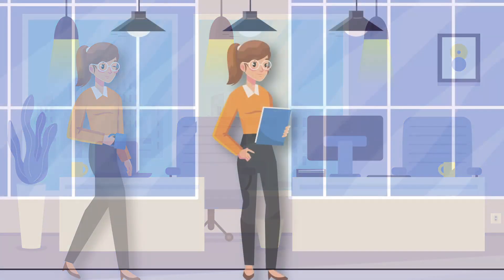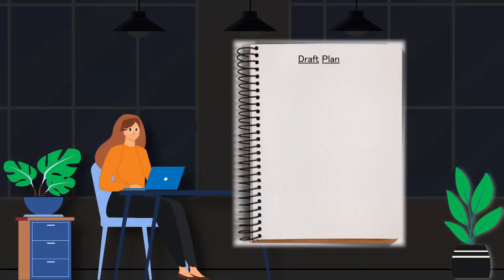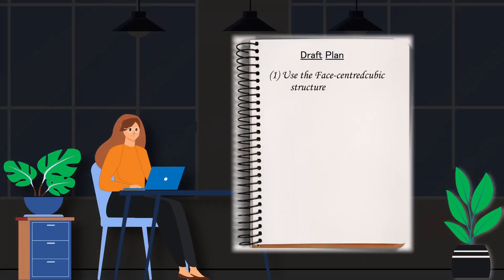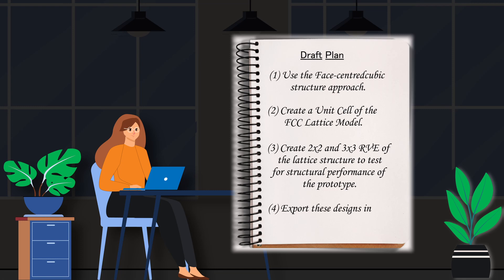As Megan left Maxwell's office, she started thinking of her first steps. With a piece of paper, she quickly drafted a plan: number one, use the face-centered cubic-like structure; two, create a unit cell of the model; three, create 2x2 and 3x2 representative volume elements of the structure to test the structural performance of the prototype; and four, export these designs into STL files for use in the 3D printer. And just like that, Megan set off to work.